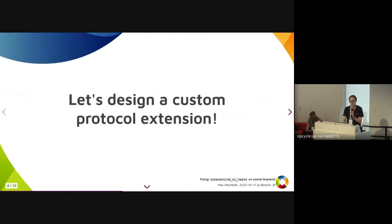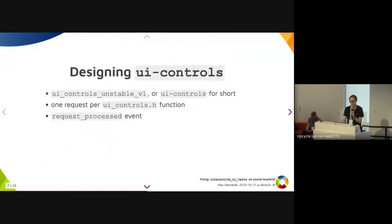So we wanted to fix this by designing our own custom protocol extension, which has a very creative name, as you can see. The intention is that it has almost the same semantics as all the functions in the UI controls header. To achieve this, we have one protocol request per function in the header, plus an additional request — process event — that the compositor can send back to the client to tell it that it has finished processing the request. And this needs no run loops in its implementation, which is very nice.